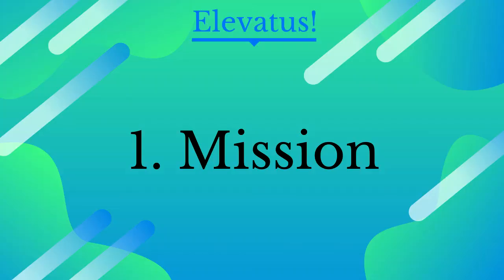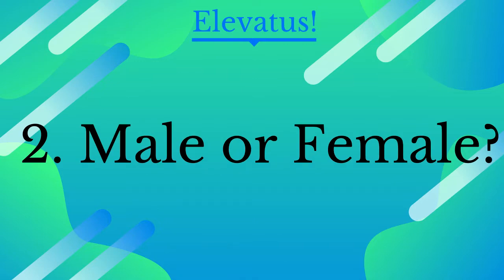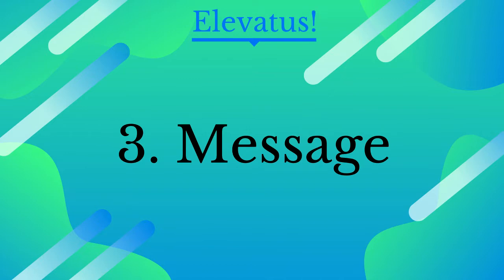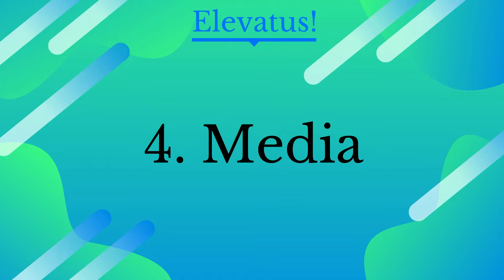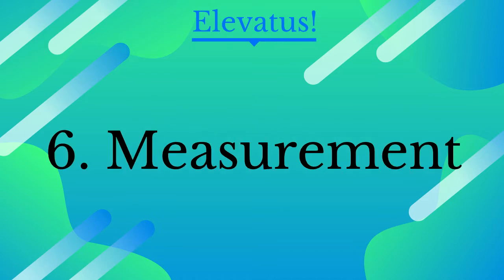To sum up, the six M's in developing a marketing communication strategy are: one, Mission or objectives; two, Male or Female — that is, target audience; three, Message; four, Media or channels; five, Money or budget; and six, Measurement or evaluation. That's the simplest way to remember the six important steps for developing a marketing communication strategy that works. Using the six M's approach will help you improve your marketing communication planning and give you an advantage in the marketplace.